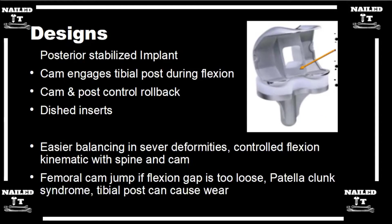Fluoroscopic studies have taken these knees through a range of motion. Normally you get femoral rollback — going into deep flexion, the femur actually rolls back. What they found in knee replacements is paradoxical motion: when you flex the knee down, looking at a lateral fluoroscopic view, the femur actually shifts anteriorly instead of rolling back. Some highly conforming polys are built with a 9mm anterior lip to try to prevent that paradoxical motion and impart more stability to the knee.